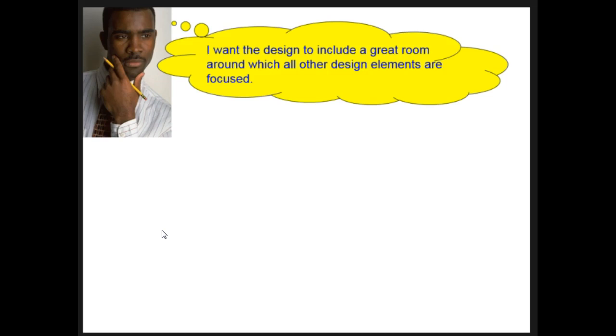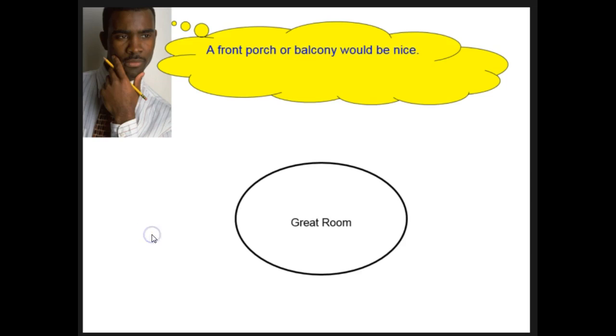So here this guy is thinking about doing a one-bedroom house for a single person, and he says he wants to put a great room. That's like a family room, living room, whatever you call it. He thinks that he wants that to be the center focus, and then he says maybe he wants to have a front porch or balcony.